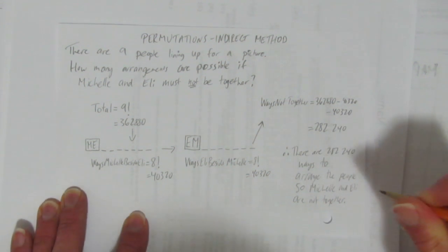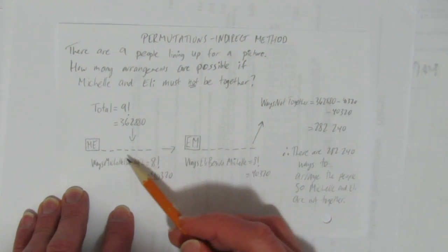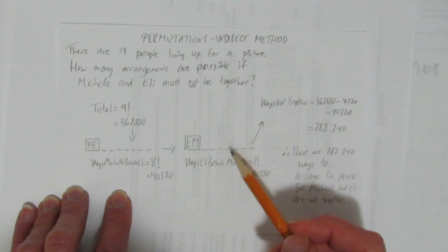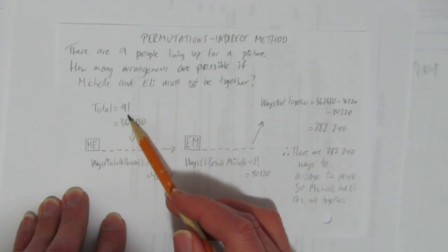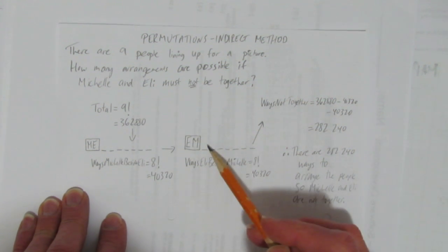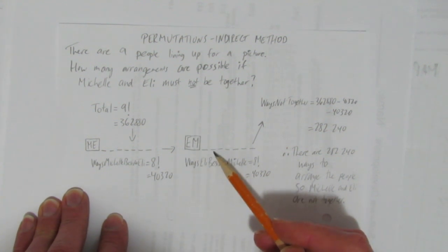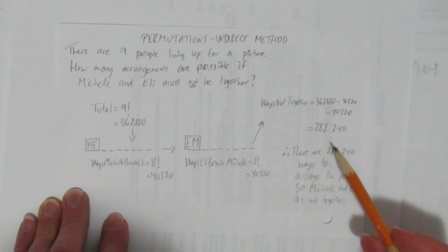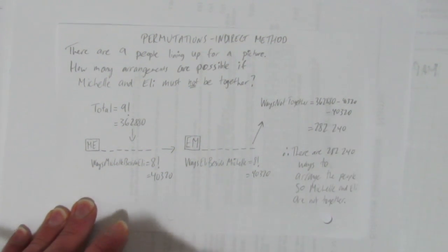So, Michelle and Eli are not together. We've solved it. How did we do it? We used the indirect method. We saw there'd be way too many possibilities to try and count how many ways they couldn't be together. So instead, we thought about how many total ways could we arrange everyone, and then we just subtracted the two cases or two situations or two scenarios where they were together. And that gave us indirectly the number of ways that they were not together. That's the indirect method.